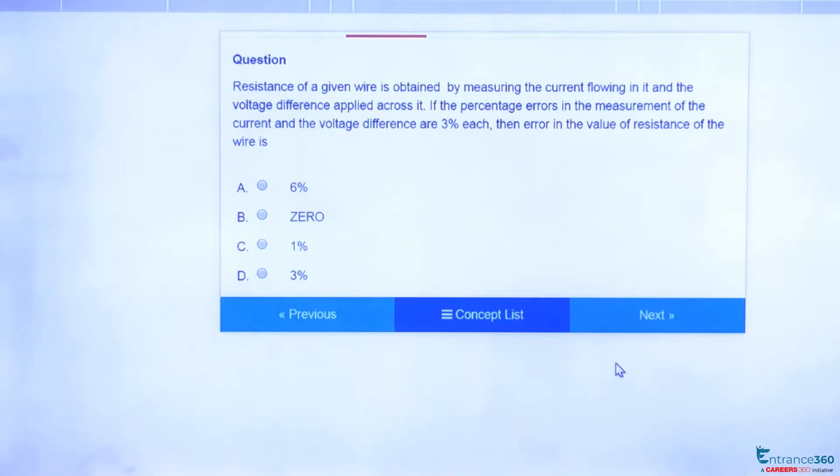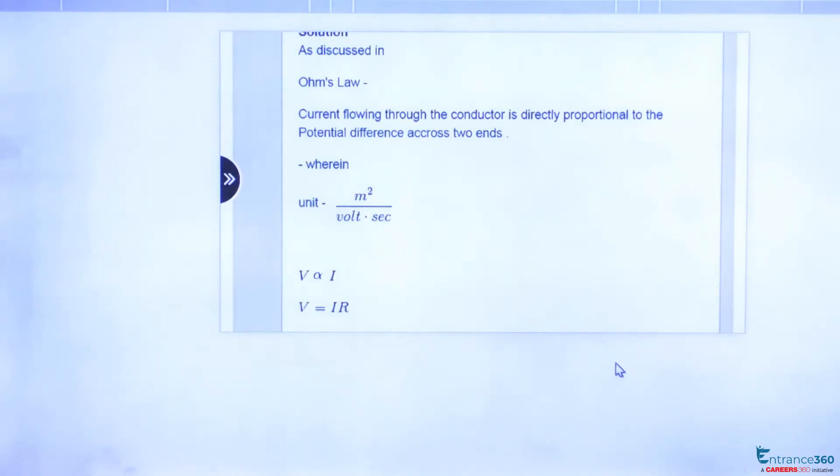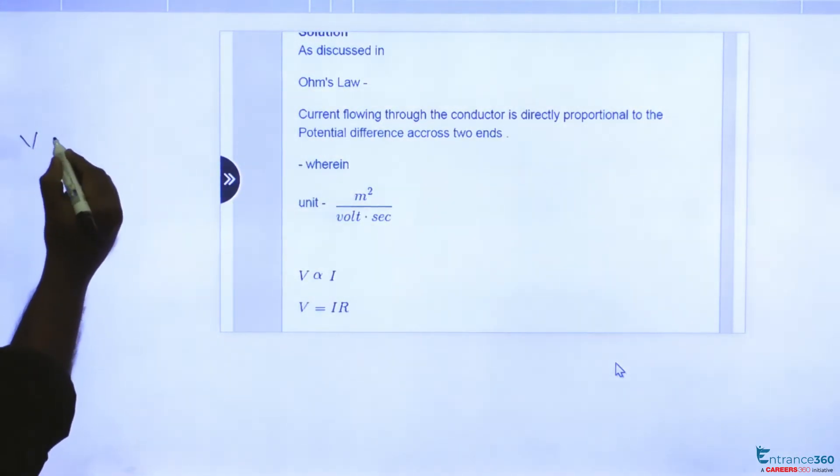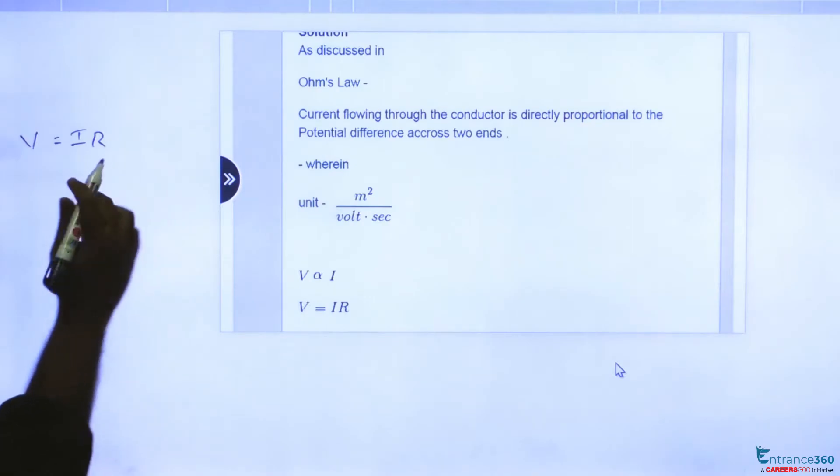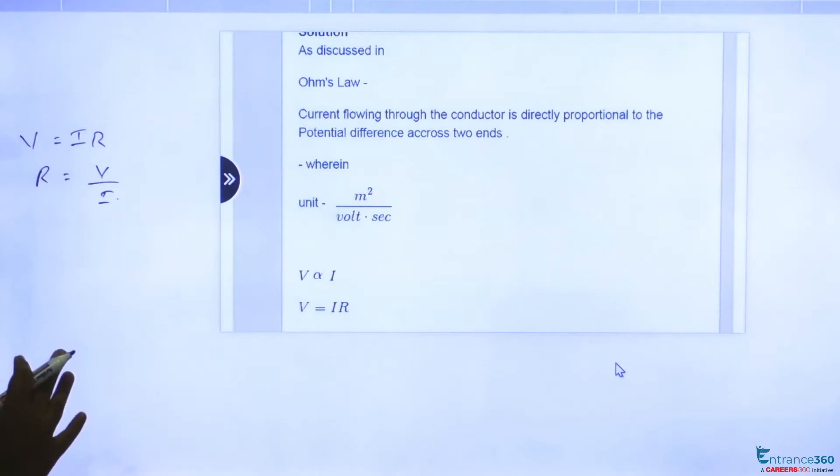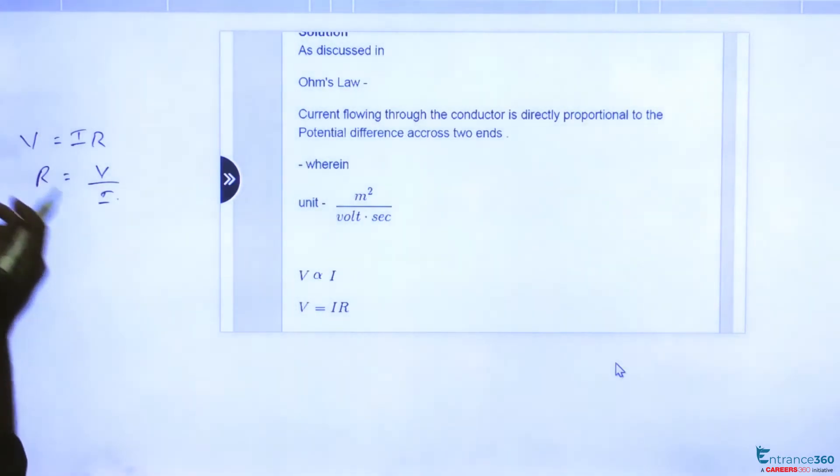You have to find the error in the value of resistance. We can use Ohm's law here. By Ohm's law, we know V equals IR, or under given constant conditions like constant temperature, R equals V by I. Given that 3% is the error in measurement of V and I.